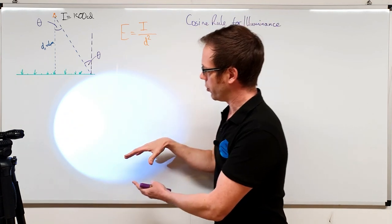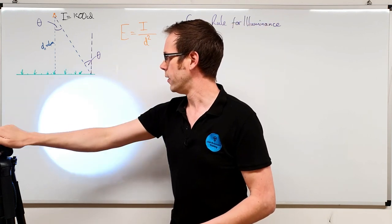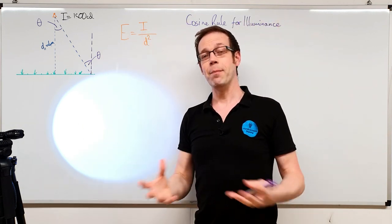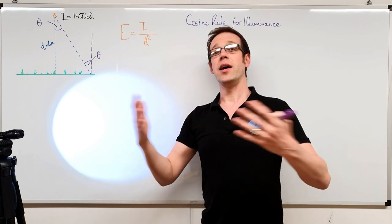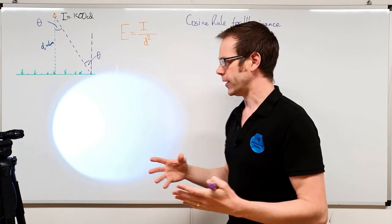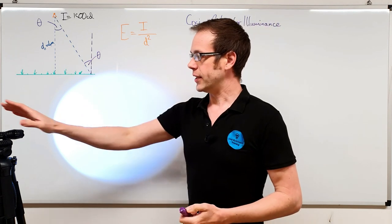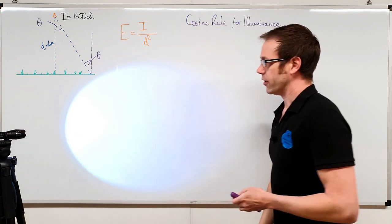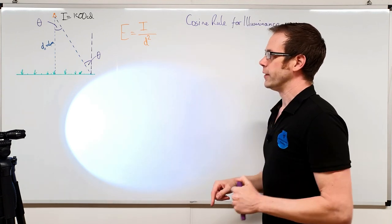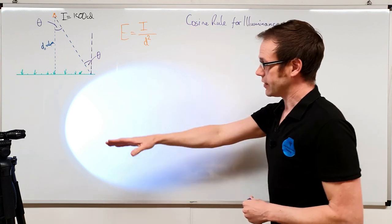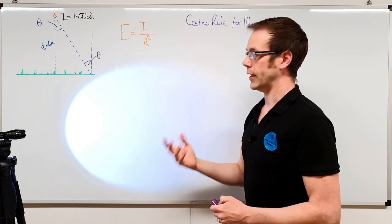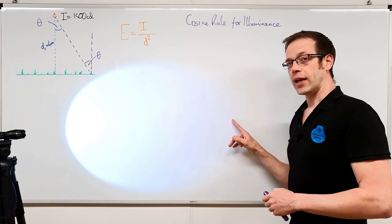There's something else happening too. Look at the overall pool of light — what happens to it? The area it covers gets bigger. The same amount of light is effectively falling on a larger area, which means the light level on the surface drops because it's more spread out. As we make the angle bigger and bigger, the pool covers a larger and larger area, so the overall illuminance gets lower and lower, especially further from the centre.